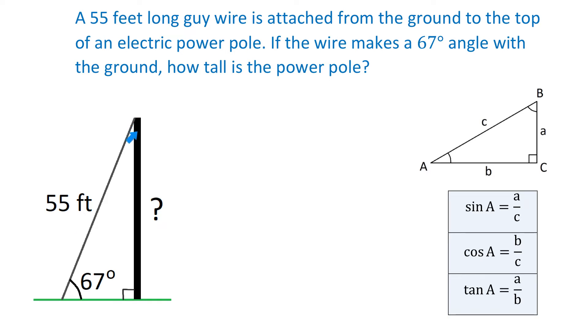We have to find the height of this power pole, and in this triangle, this is the side that is opposite of the 67 degree angle. So in this right triangle, we have an acute angle, we have the hypotenuse, and we have to find the side that is opposite of this acute angle.